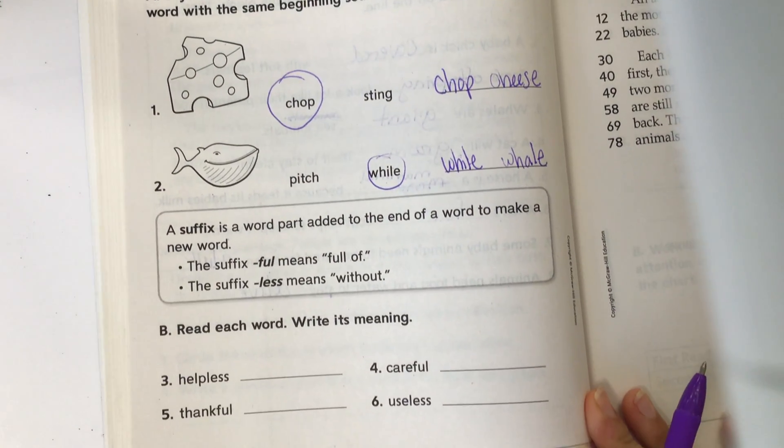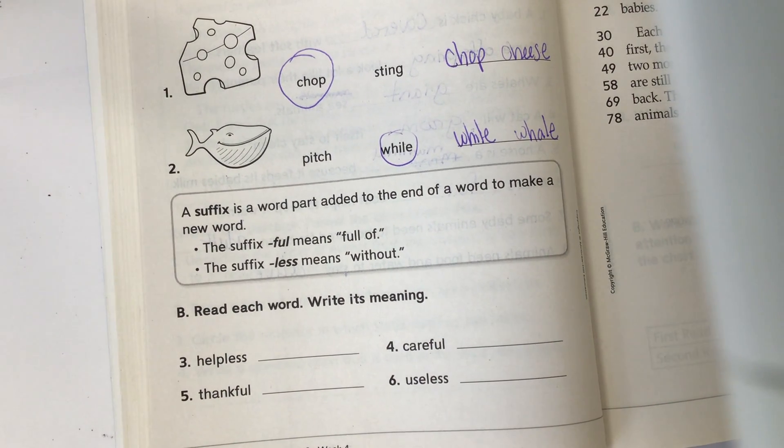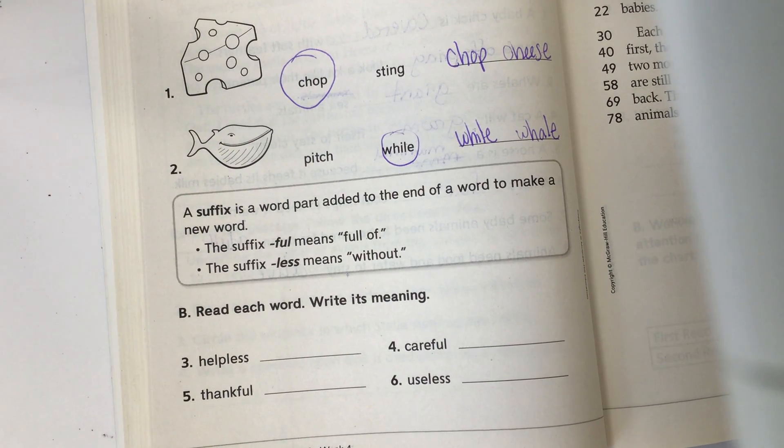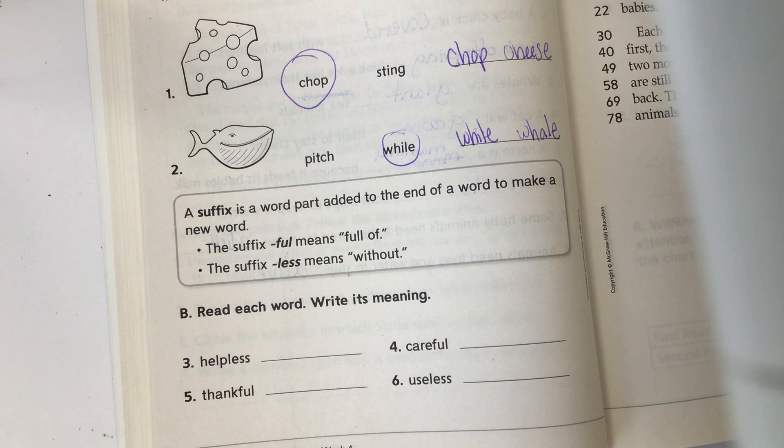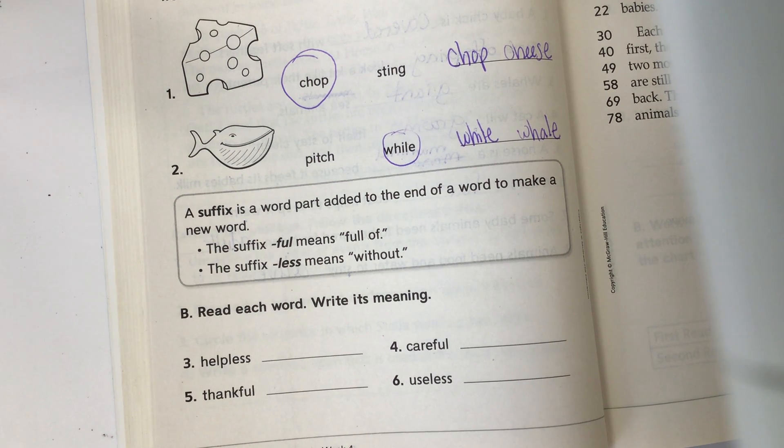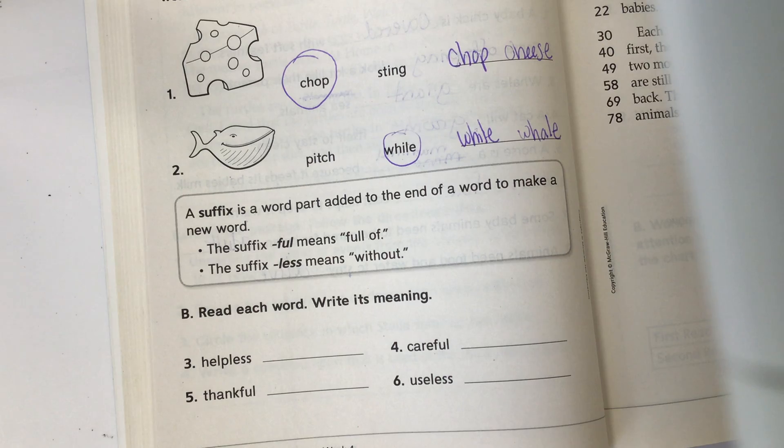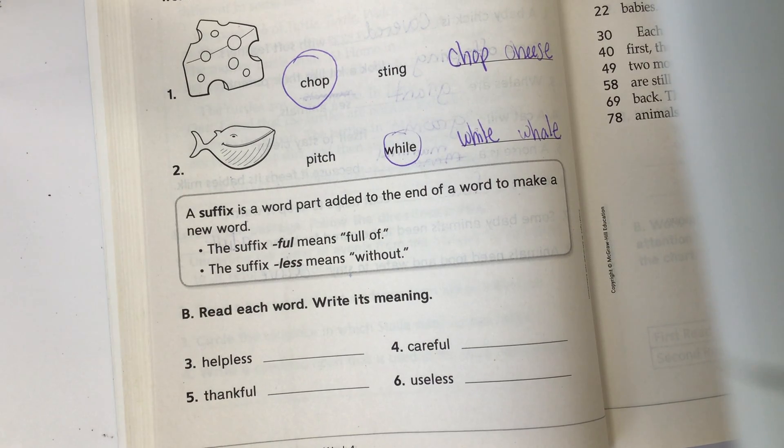All right, next section. A suffix is a word part that is added to the end of the word to make a new word. So the suffix full means full of, and the suffix less means without. So remember a suffix comes at the end.